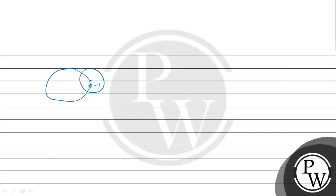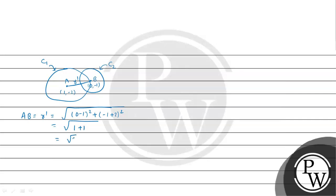The center of C1 is (1, −2) and it passes through the center of C2 which is (0, −1). Using the distance formula, the radius of C1 is the square root of (0 − 1) squared plus (−1 − (−2)) squared, which is the square root of 1 plus 1, equal to the square root of 2.